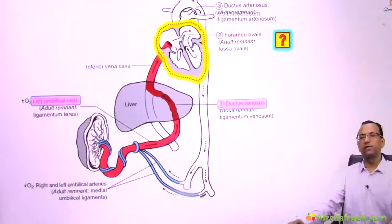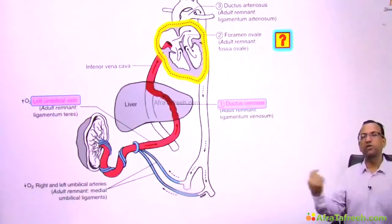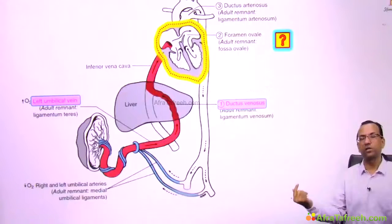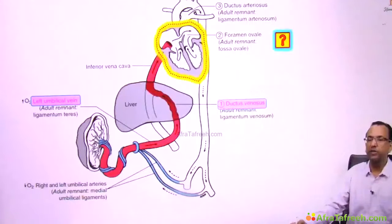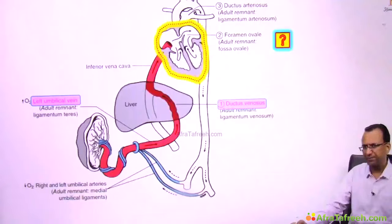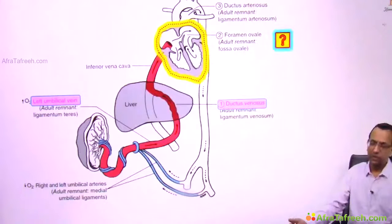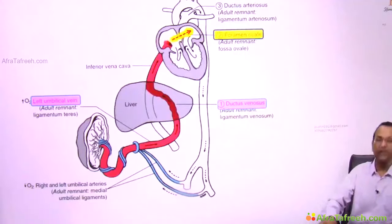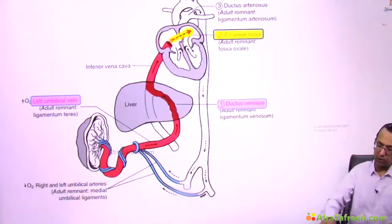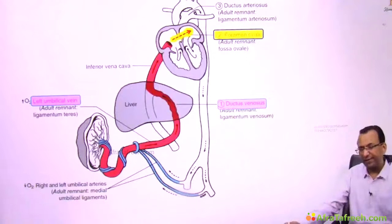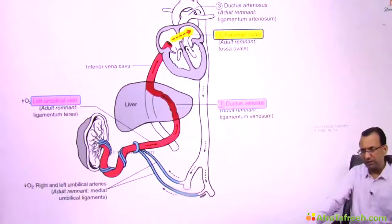When blood reaches the heart, does it go to the lungs? No — because the lungs are immature and don't require that much oxygenated blood. So the blood must bypass the lung. In fetal circulation, blood in the right atrium bypasses the lung by going directly into the left atrium through the foramen ovale.